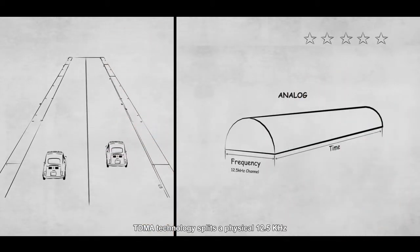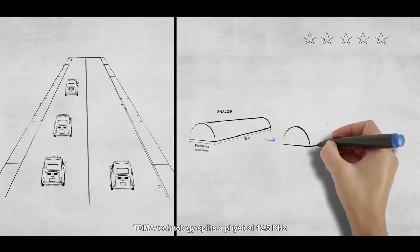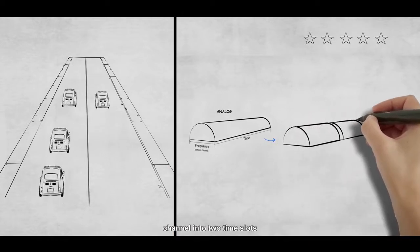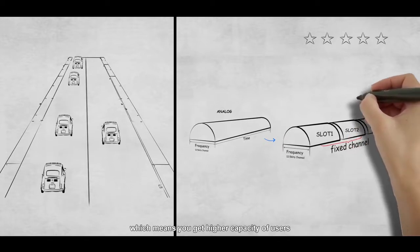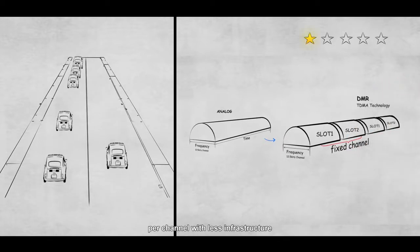TDMA technology splits a physical 12.5 kHz channel into two time slots, which means you get higher capacity of users per channel with less infrastructure.